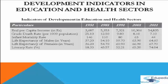Infant mortality rate: in 1951 it was 146 and in 2011 it came down to 44. These are indicators regarding the health sector. Life expectancy of males at birth: in 1951 it was 37 years and in 2011 it came up to 64 years.